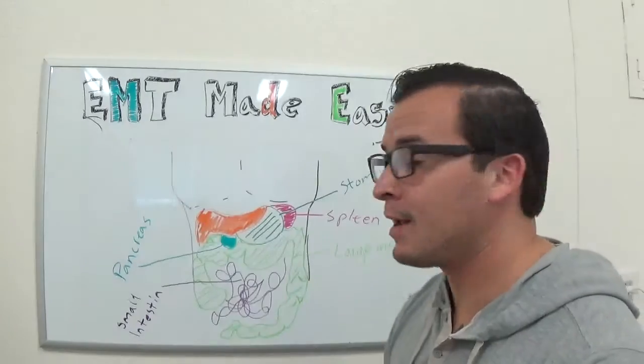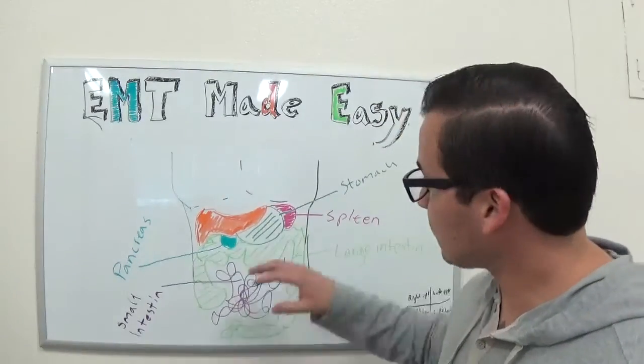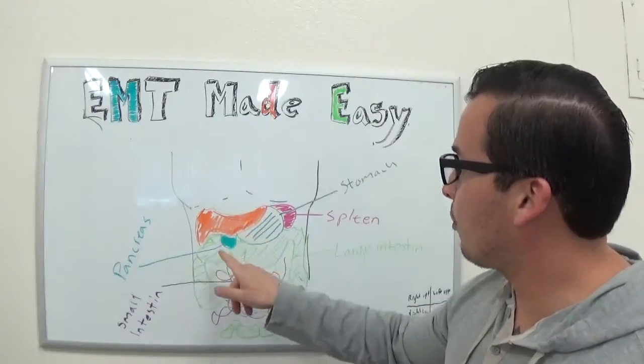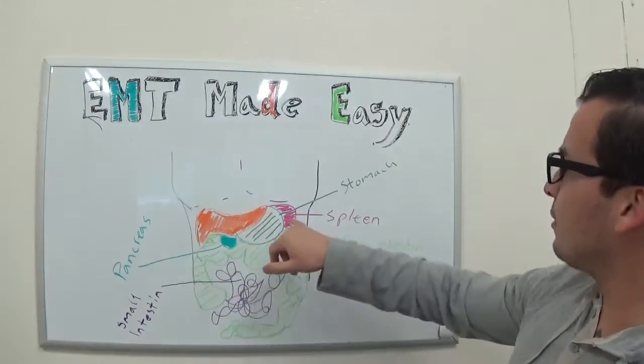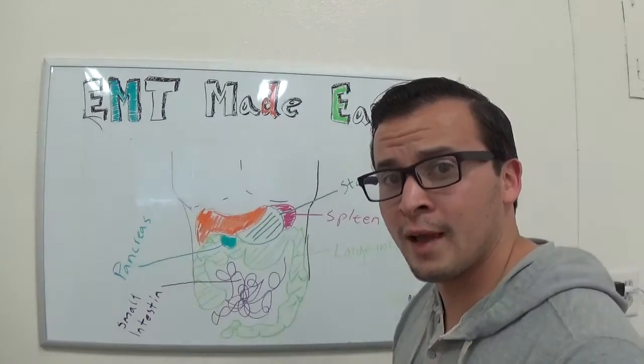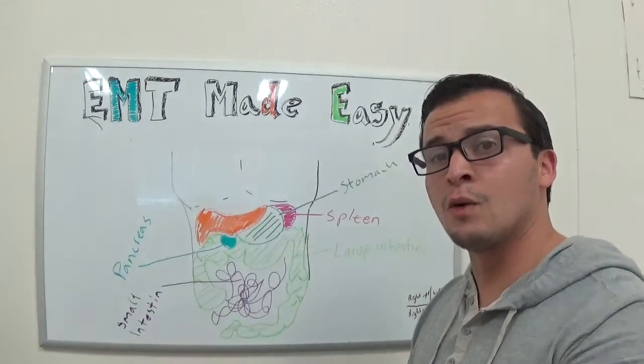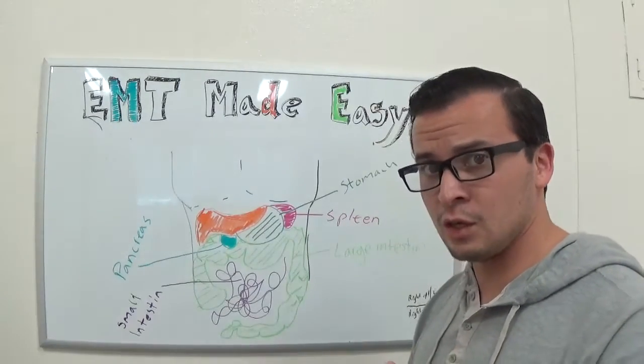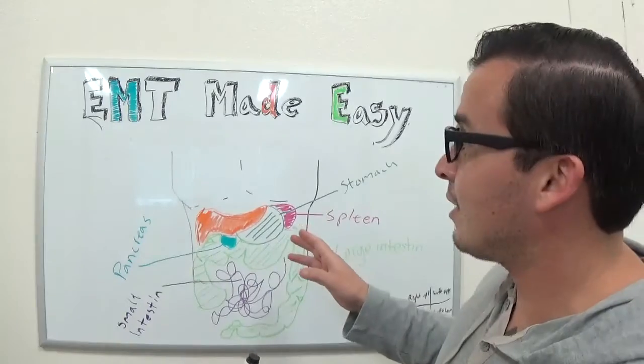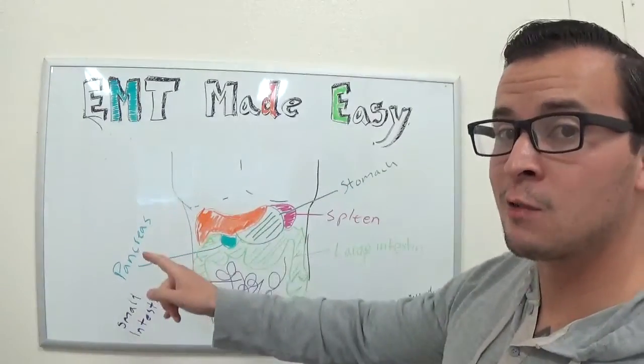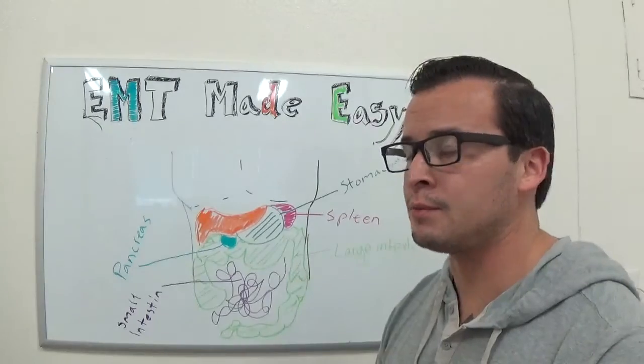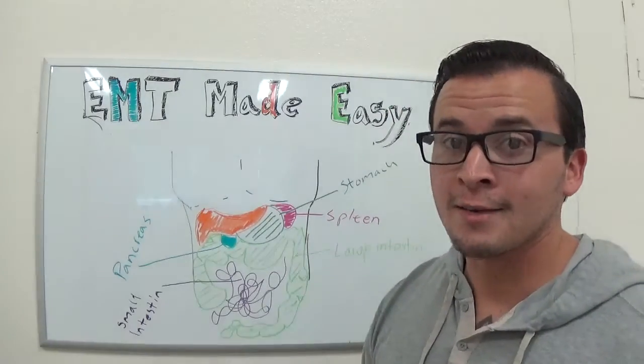First things first, we have two types of organs in the abdominal region. We have your solid organs, so that would entail like your liver - this right here is your liver. Then you have your pancreas kind of tucked in underneath behind the liver. It's on the left side of the patient. Now remember, it's very important that when we're talking about a side for a patient, we're talking about their side, never our side. So if I'm looking at the patient like this, and I say it's on the right side, I'm not talking about my right, I'm talking about the patient's right. That's very important to remember throughout your medical career. Remember, it's always the patient side, not your side.